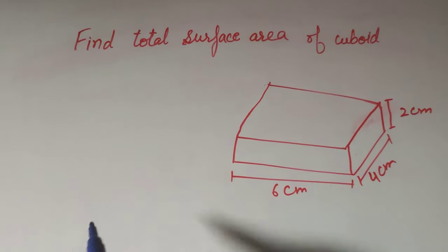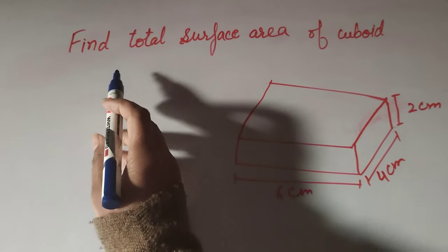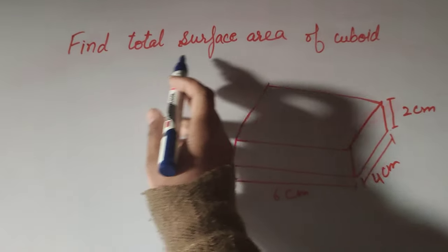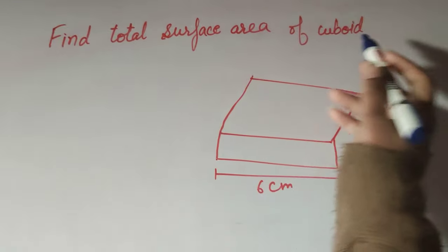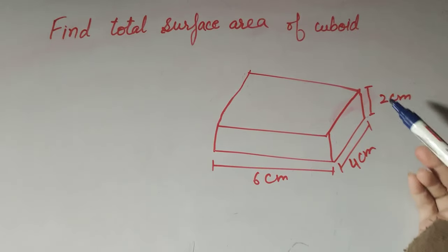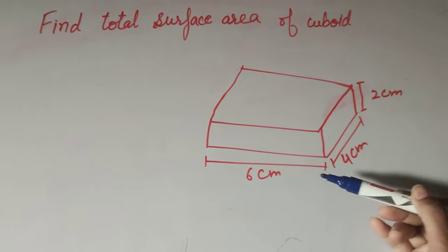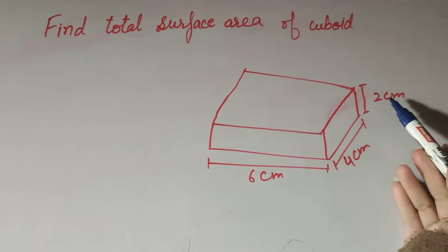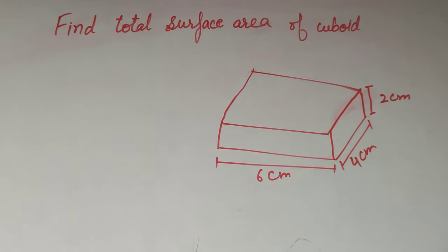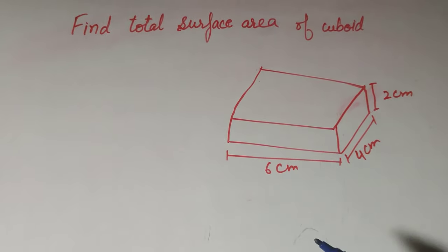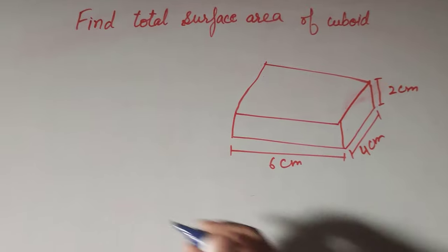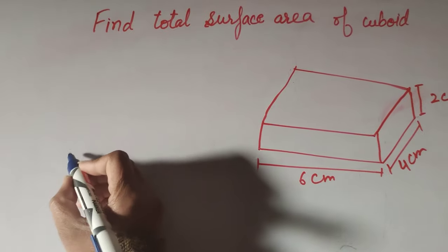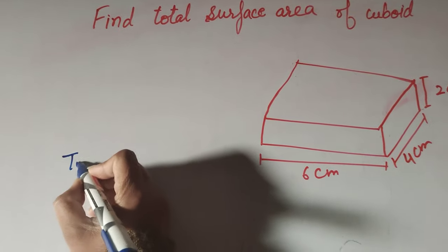Hello friends, welcome to my channel. In this video we discuss how to find the total surface area of a cuboid. One cuboid is given and we have to find its total surface area, whose length, breadth, and height are given.